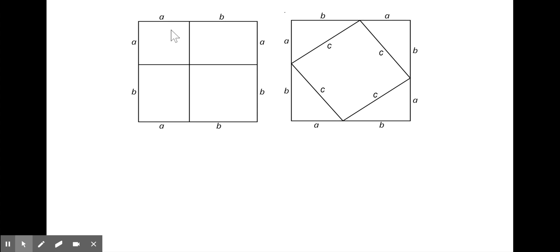On the left, we have a square of side lengths A plus B, so we can write the area as the quantity A plus B squared. We can also look at how it is partitioned, and we can see that we have a square with an area of A squared, and a square with the area of B squared, and two rectangles of side lengths A times B. We can rewrite the area as A squared plus 2AB plus B squared.